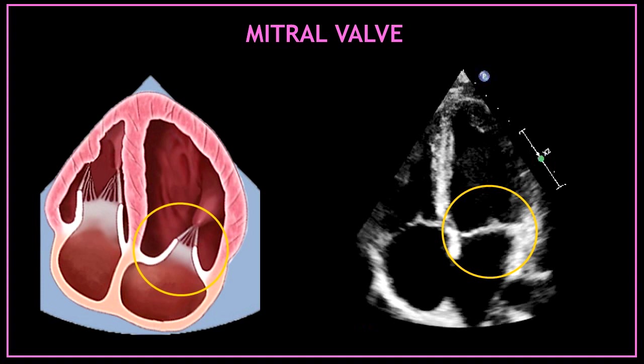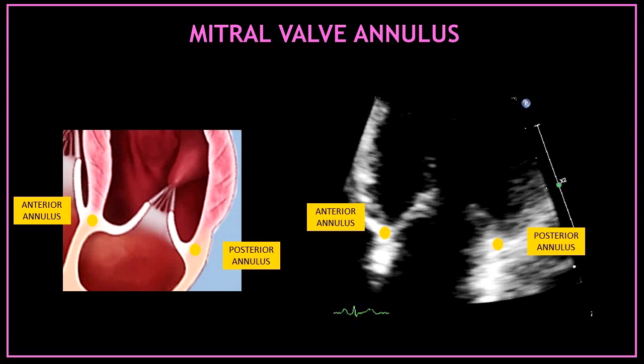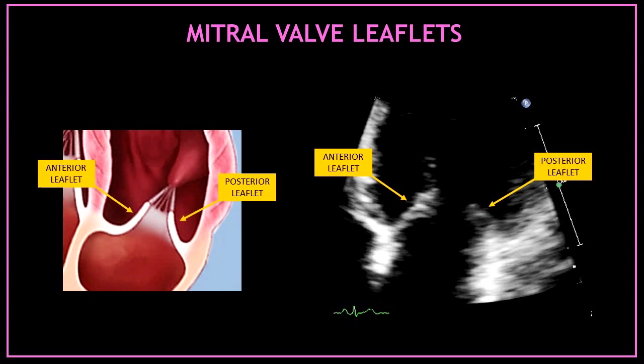In this view we can visualize two valves. The valve on the right hand side corresponds to the mitral valve. We can visualize a few structures of the mitral valve apparatus, starting with the mitral valve annulus — we can assess both the anterior and the posterior mitral valve annulus. For the mitral valve leaflets, on the left hand side we can see the anterior mitral valve leaflet, and on the right hand side the posterior mitral valve leaflet.